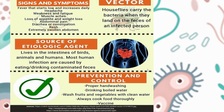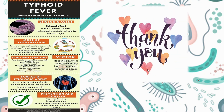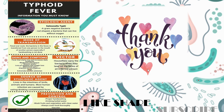Typhoid is prevented by proper hand washing, drinking boiled water, washing fruits and vegetables with clean water, and vaccination. That's all about typhoid — hope you found it informative. Please like, share, and subscribe to the channel for more updates.